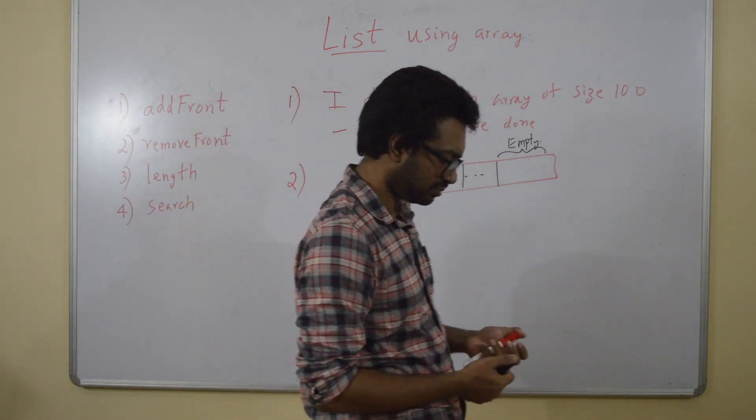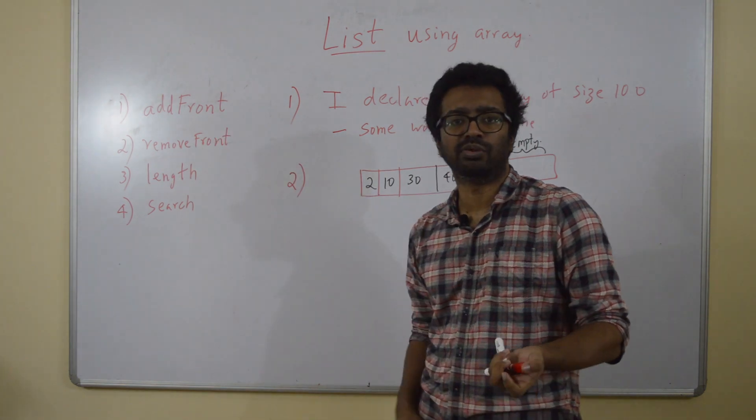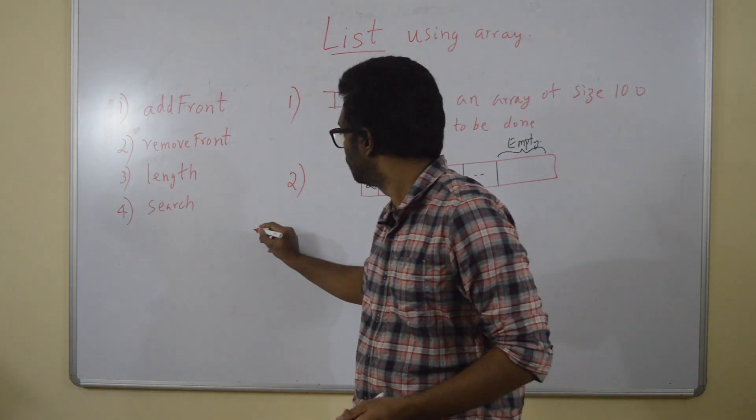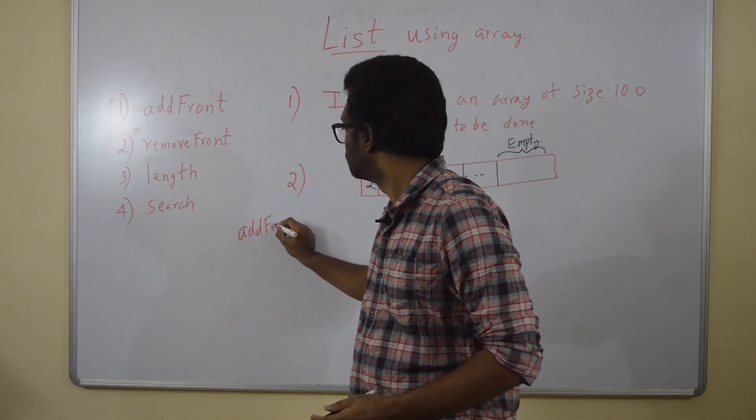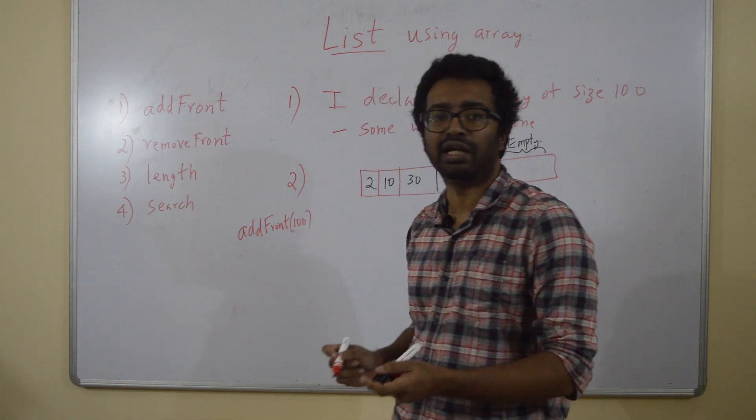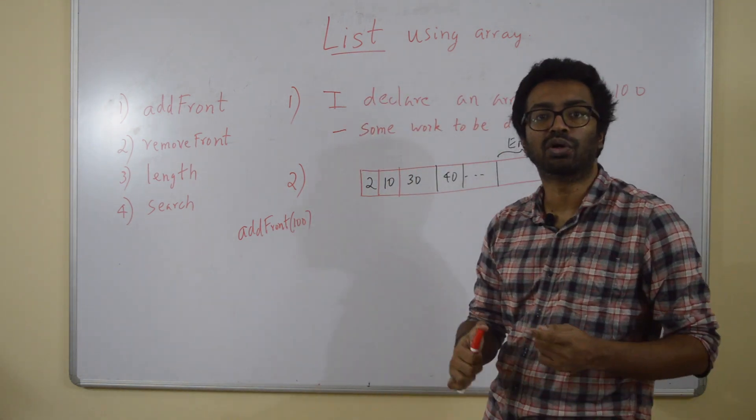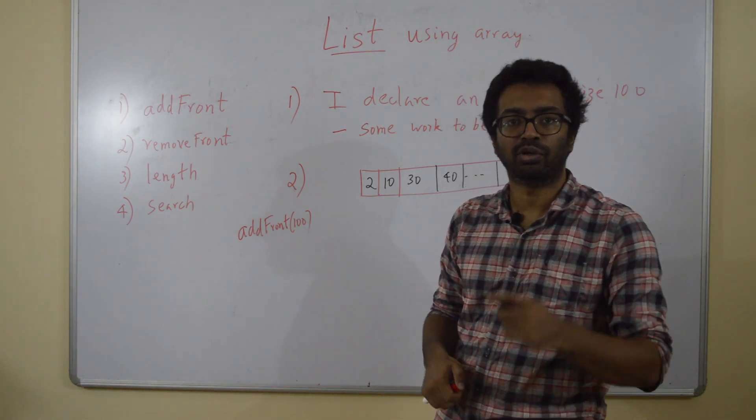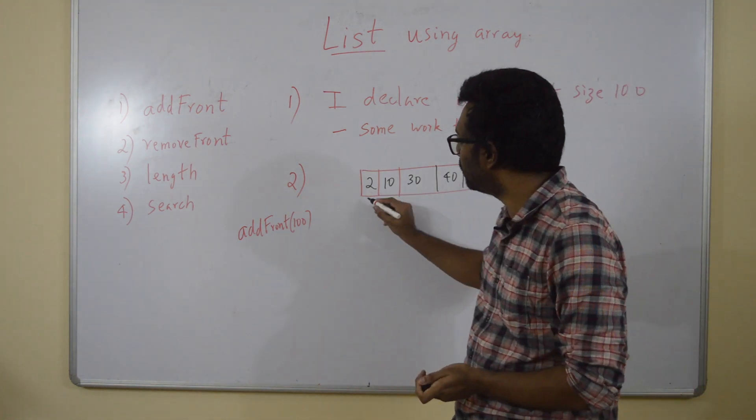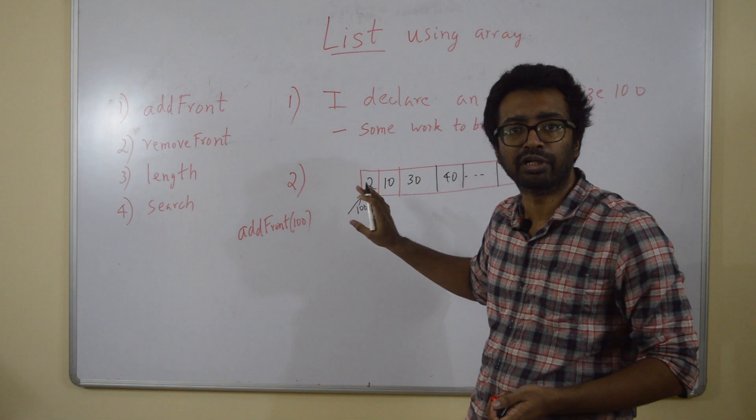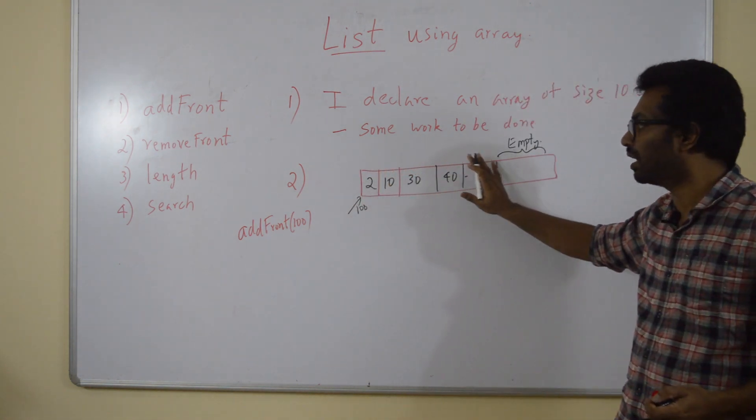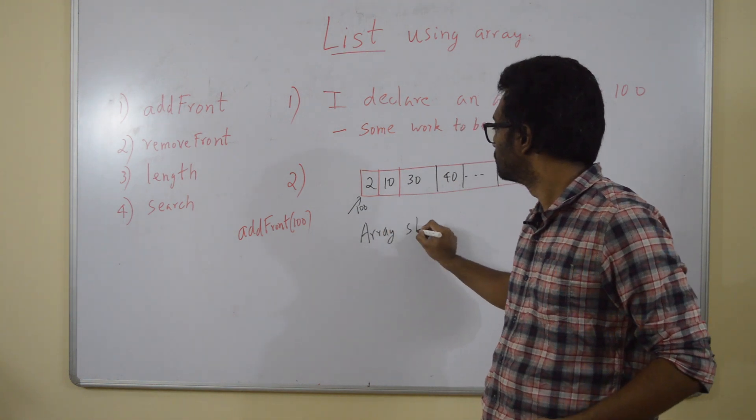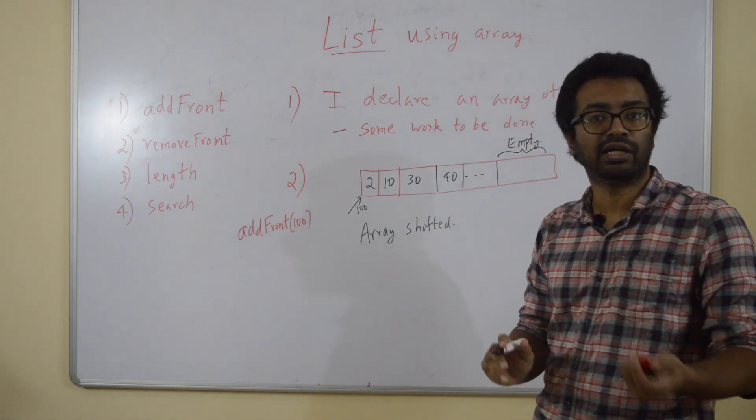Now, I want to insert an element. The user is going to call addFront, let's say addFront 100. What would happen when 100 is going to be added? To implement this, you will have to add 100 here at the front. So what does it mean? This means the entire array has to be shifted.